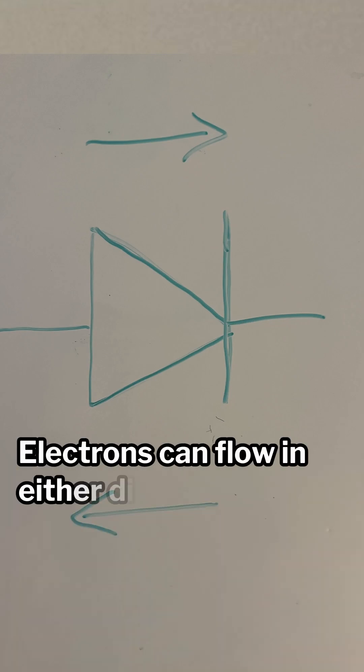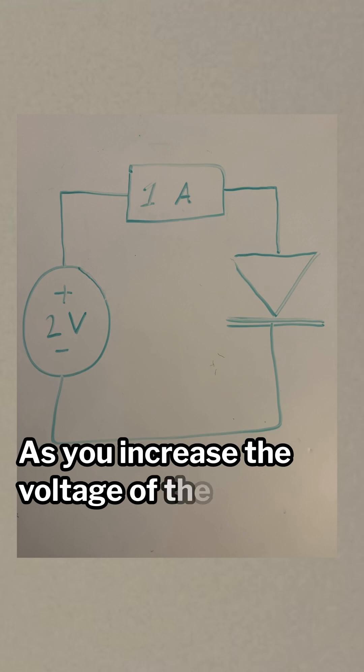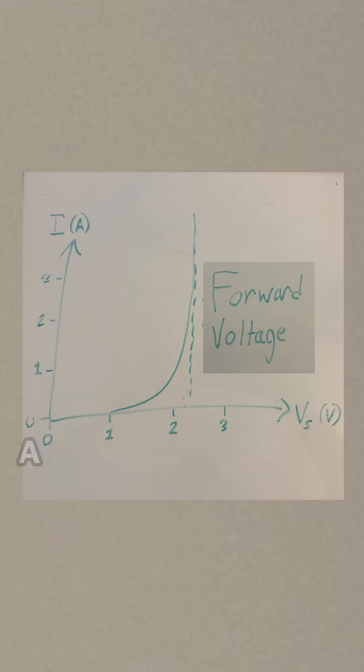Now here's the misconception: electrons can flow in either direction, just under certain conditions. Imagine you have a circuit with a diode and a lab bench power supply. As you increase the voltage of the lab bench power supply, the current won't increase dramatically until you reach the forward voltage of the diode.